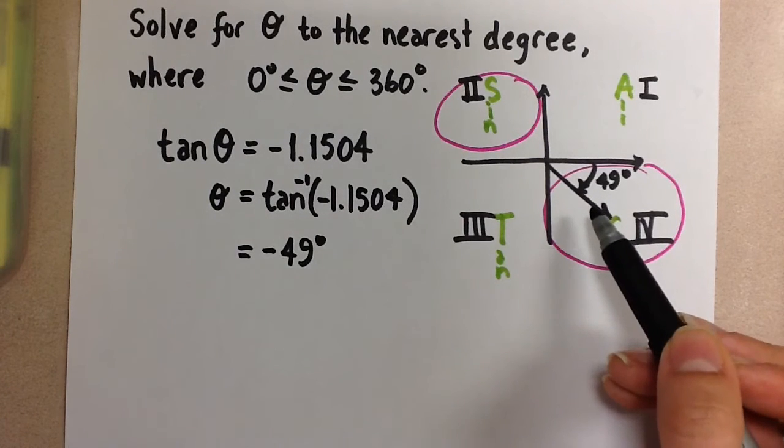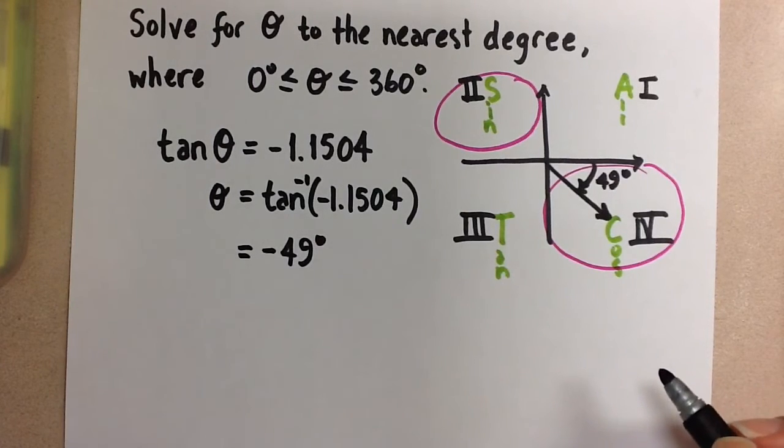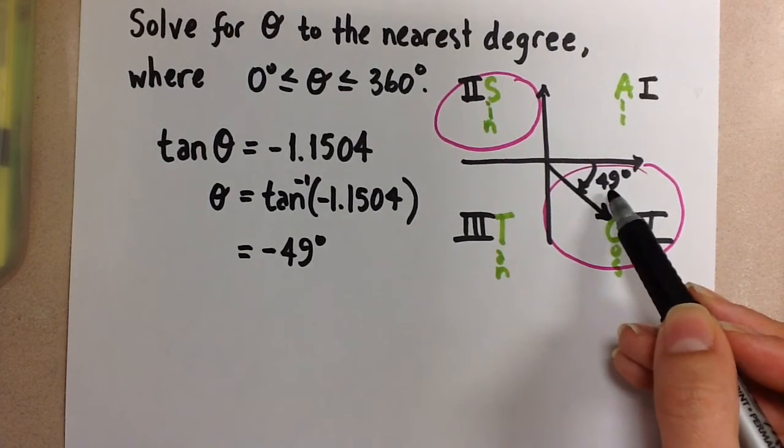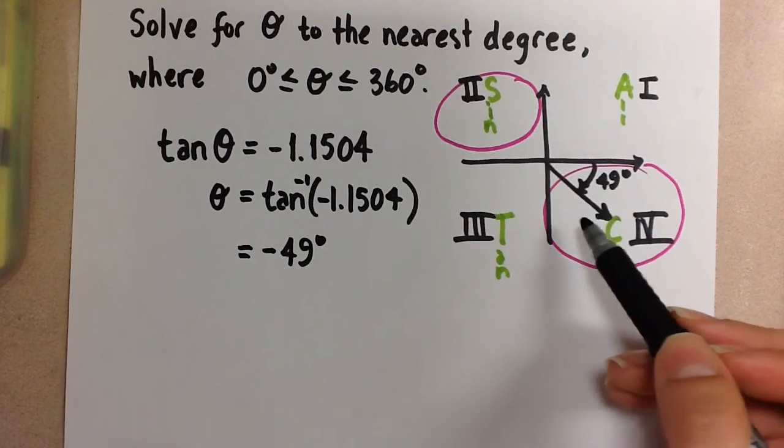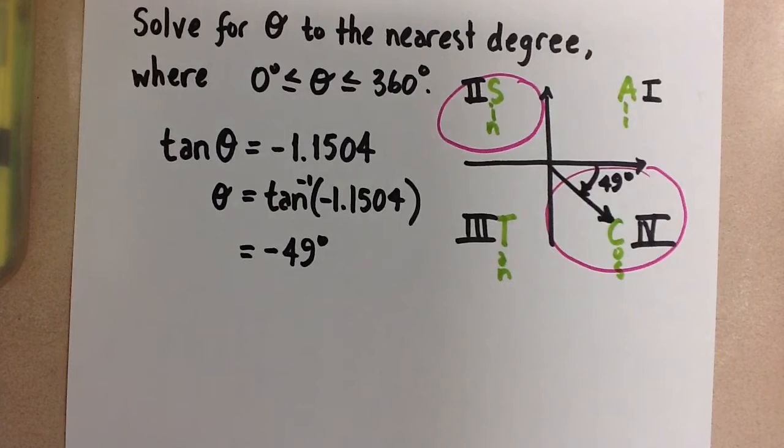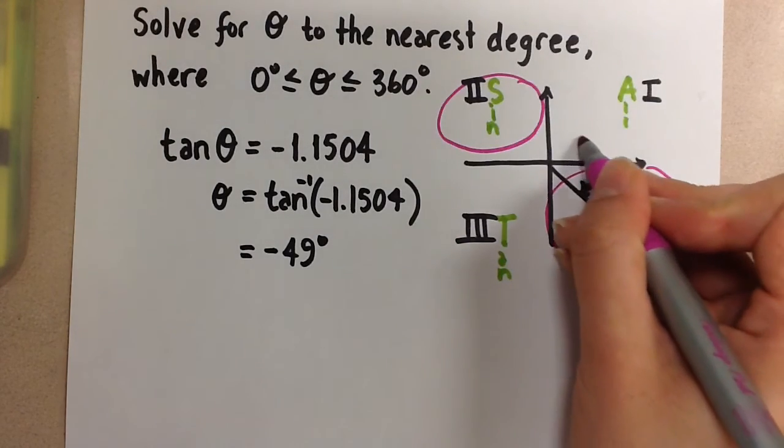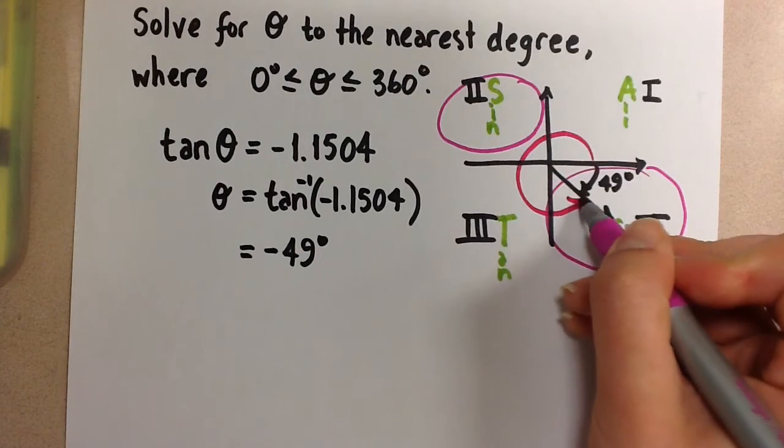But we always want to give our answers as positive principal angles. So this negative 49 degrees is not what we want our final answer to be for solving for theta. So we need to figure out what the principal angle is, or the related angle is, that comes around this way, like this.